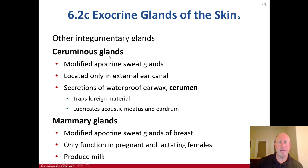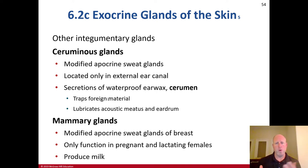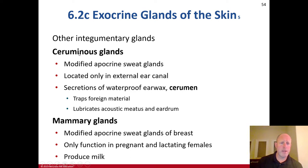Other integumentary glands are technically modified apocrine glands. The ceruminous glands and mammary glands are technically modified apocrine glands — specifically from the apocrine family. The ceruminous glands are located in the external ear canal; that's where you get your earwax, called cerumen. It traps foreign material and lubricates the acoustic meatus and the eardrum.